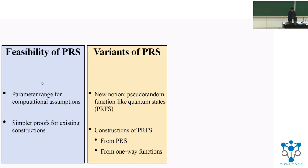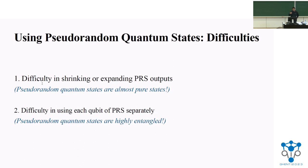Let me introduce the object called pseudorandom function-like states (PRFS). It turns out it is difficult to use PRS to build cryptographic applications for two reasons. First, generically transforming a PRS into another PRS with larger or smaller output length is difficult — unlike pseudorandom generators where generic constructions exist, having quantum output makes this hard. Second, the output qubits of PRS tend to be highly entangled, which makes them difficult to use in cryptographic applications.